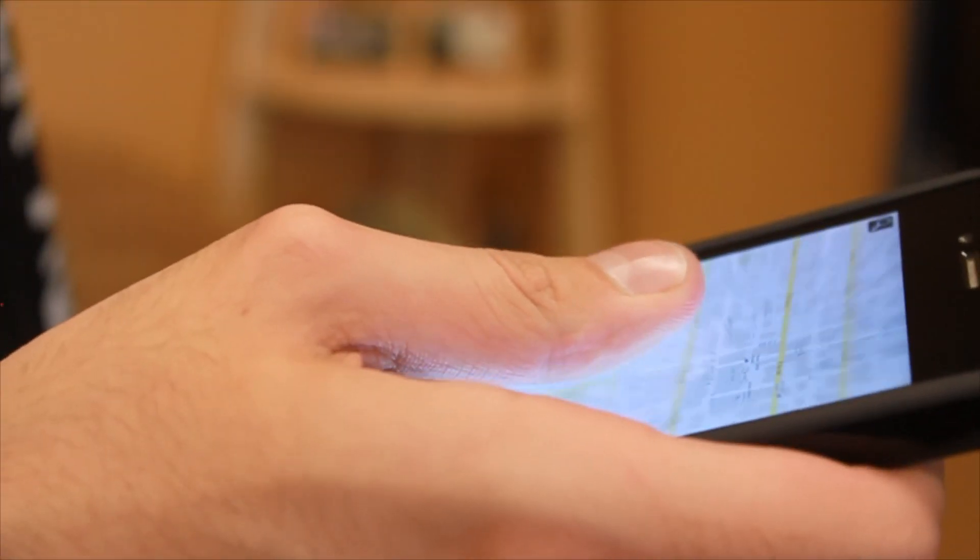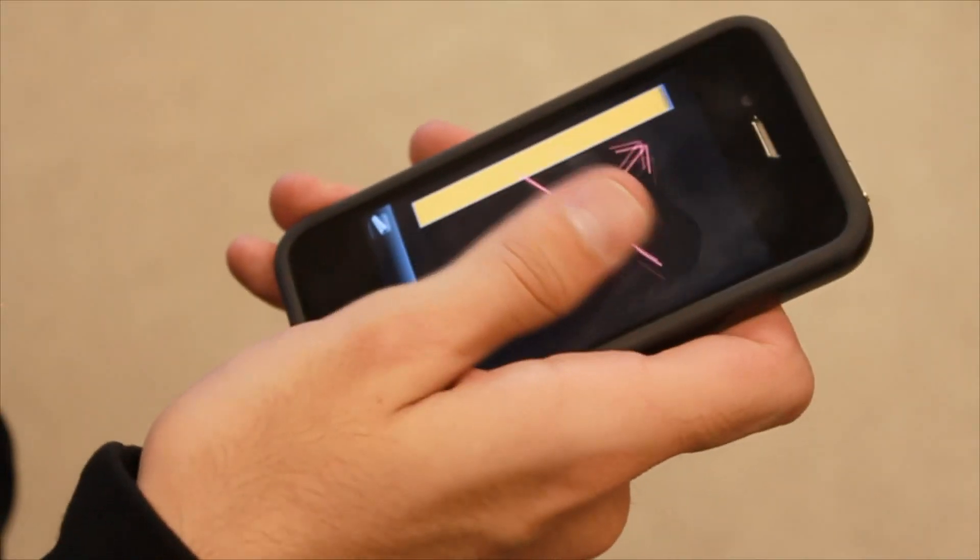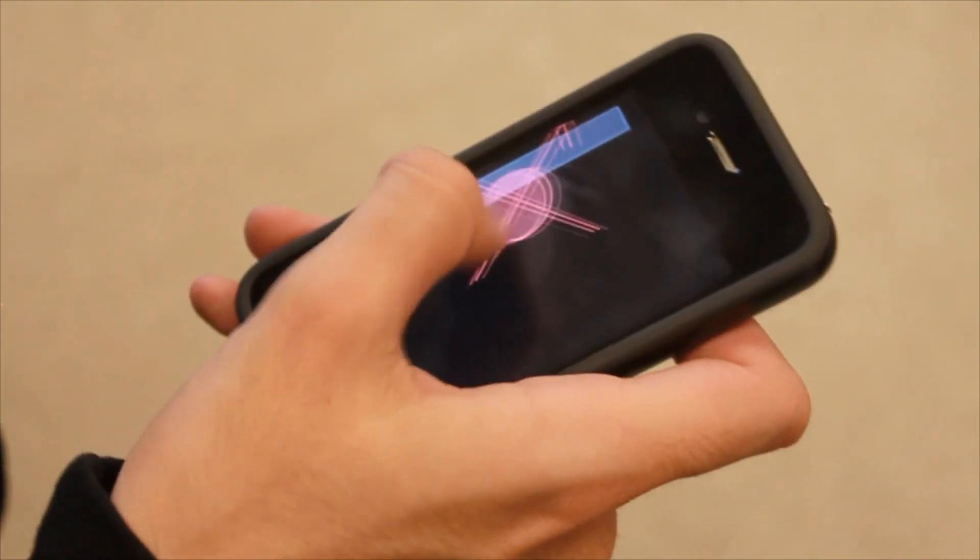The thumb's movement then performs the selected action, such as zooming in and out of a map. Our fat thumb technique presents three advancements of existing techniques for single-handed mobile device input.